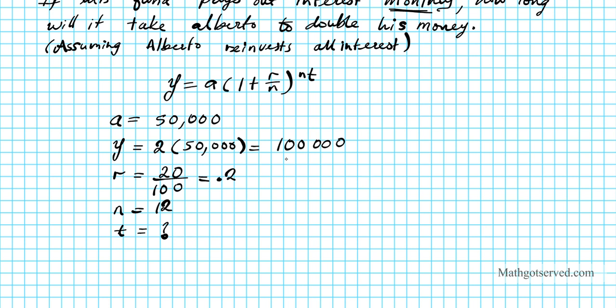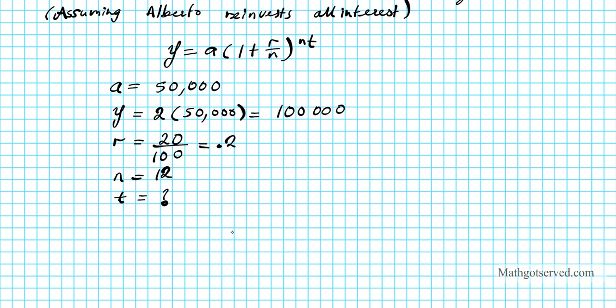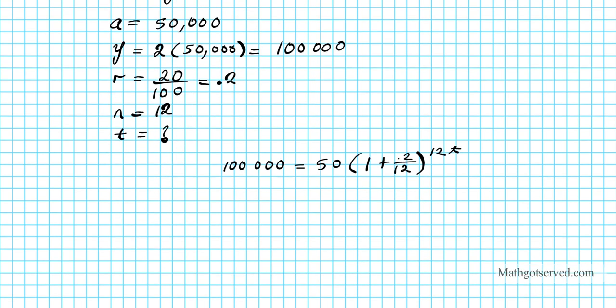So let's plug in all this information into our equation. That gives us 100,000 equals 50,000 times 1 plus 0.2 over 12, raised to 12t. To solve this, we're first going to divide both sides by 50,000. The goal is to isolate t.